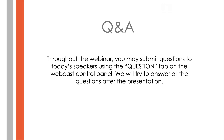Y Group encourages group learning for our events. If you are viewing the live webinar with a group on one registered person's computer, that person must complete and submit the multiple viewer registration form in order for everyone to earn credit. Download the multiple viewer registration form from the handouts tab on the control panel. Submission instructions are on the form. Viewers of archived webcasts must pass a quiz in order to download a certificate of completion.